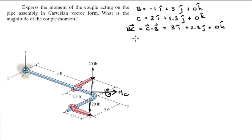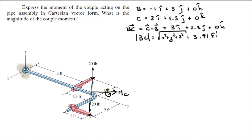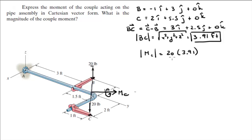Once we have the Cartesian vector form of BC, we find its magnitude using the square root of the sum of the squared components: √(3² + 2.5² + 0²), which comes out to 3.91 feet. The magnitude of the couple moment is then C = F × d = 20 pounds × 3.91 feet, which equals 78.1 foot-pounds.